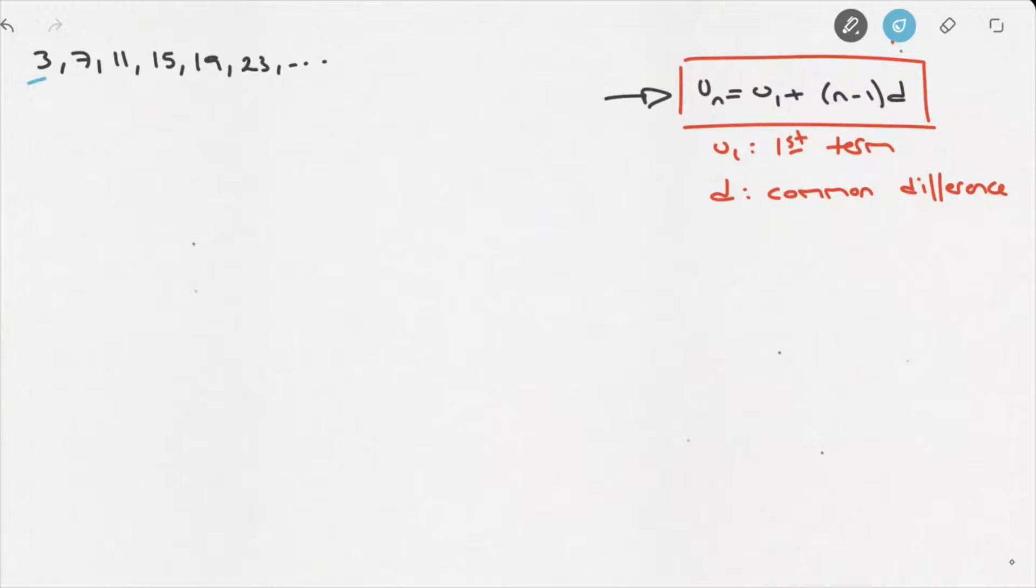Well, its first term, that's easy. It's simply the first term, which is 3. Its common difference, well, let's see, as we go from left to right, from one term to the next, we're always adding 4. So, its common difference, d, should be 4.